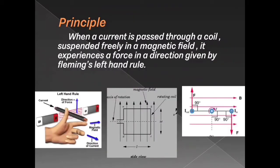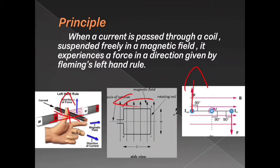Let's see the principle of the ballistic galvanometer. As we saw with Fleming's Left Hand Rule, when a current passes through a coil placed in a magnetic field, it experiences a force. This force is called torque. Here you can see the coil placed in a magnetic field experiencing an upward force. If the current passes in the other direction, the torque produces a downward force.